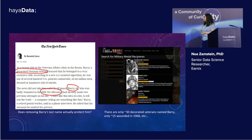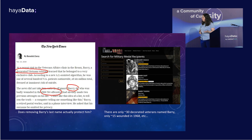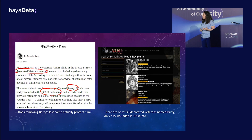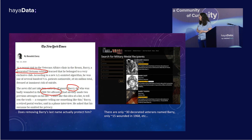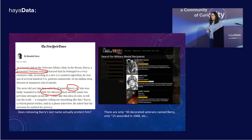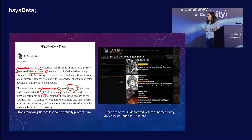A few years ago, I was engaged with the Veterans Affairs, which is the federal organization that takes care of the needs of U.S. veterans, on a project that aimed to identify veterans with high probability of committing suicide. And while I was engaged in this project, I found this piece from the New York Times, where a person named Barry was found by an algorithm to be at a high risk of committing suicide.